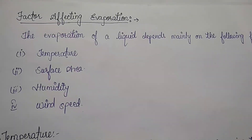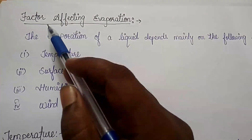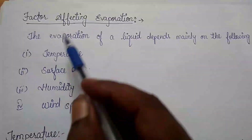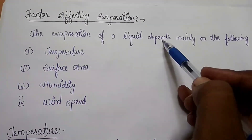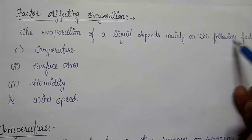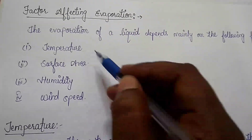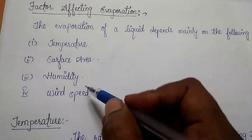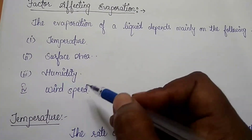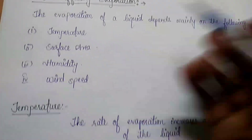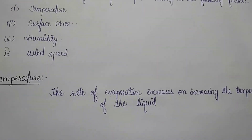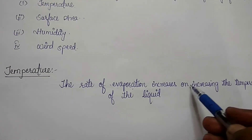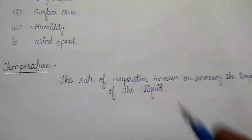Now let us see what factors affect evaporation. The evaporation of a liquid depends mainly on the following factors: temperature, surface area, humidity, and wind speed. The rate of evaporation increases on increasing the temperature of the liquid.